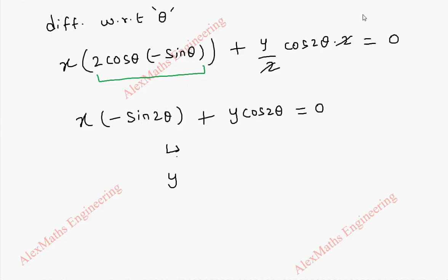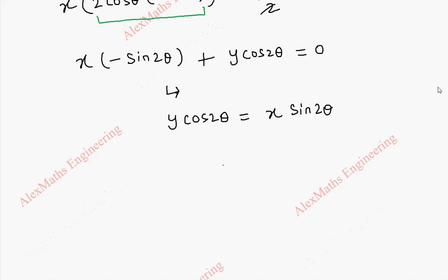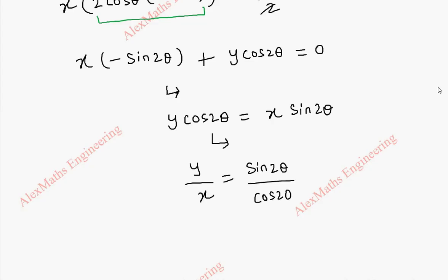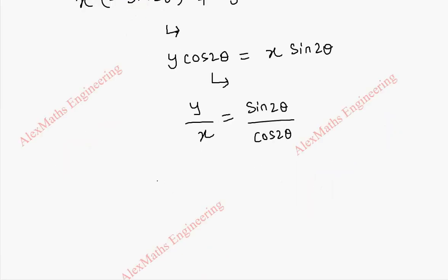Taking the term to the other side: y cos2θ = x sin2θ. So y/x becomes sin2θ/cos2θ, which can be rewritten as tan2θ. So finally we got tan2θ = y/x.